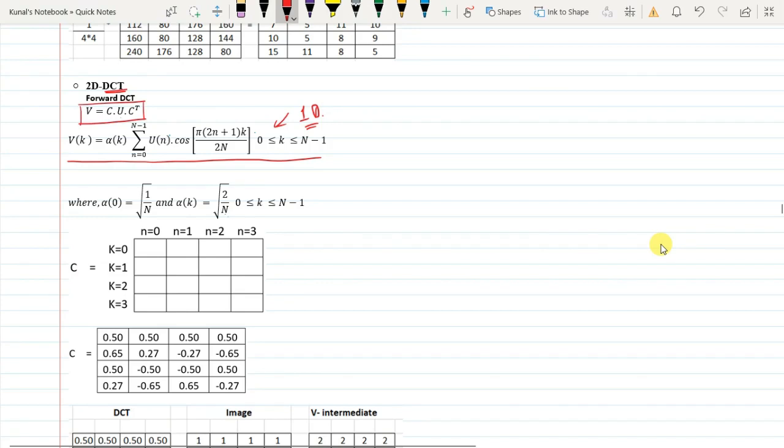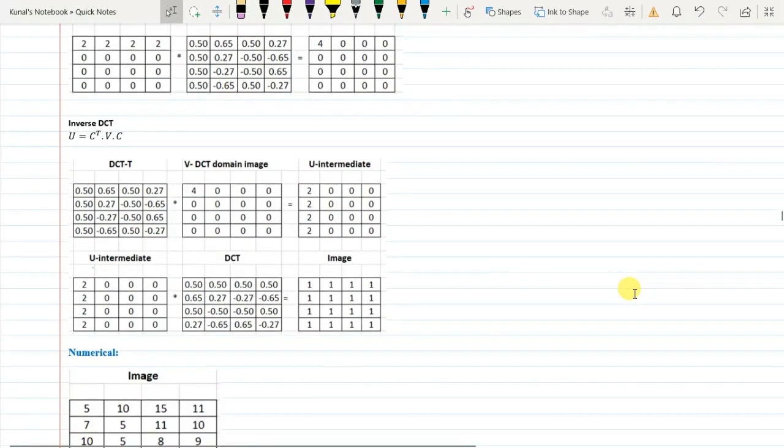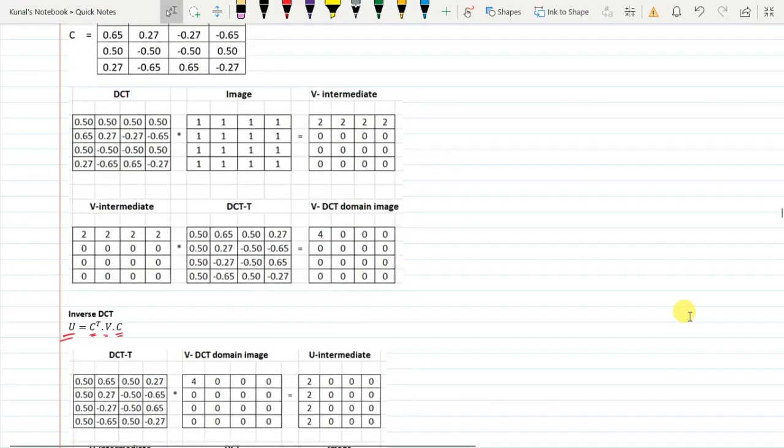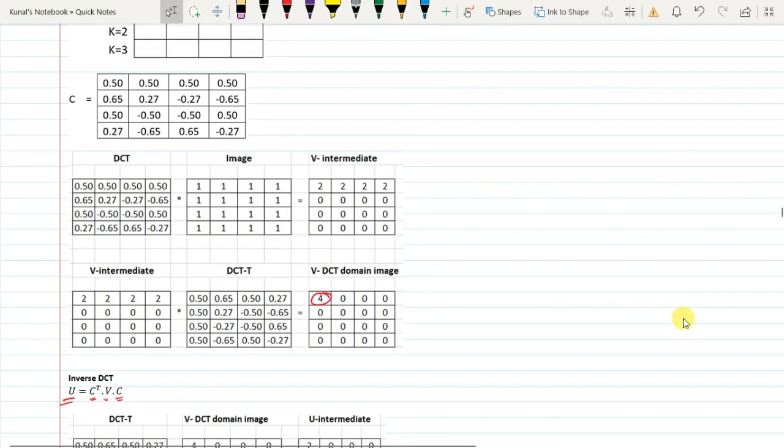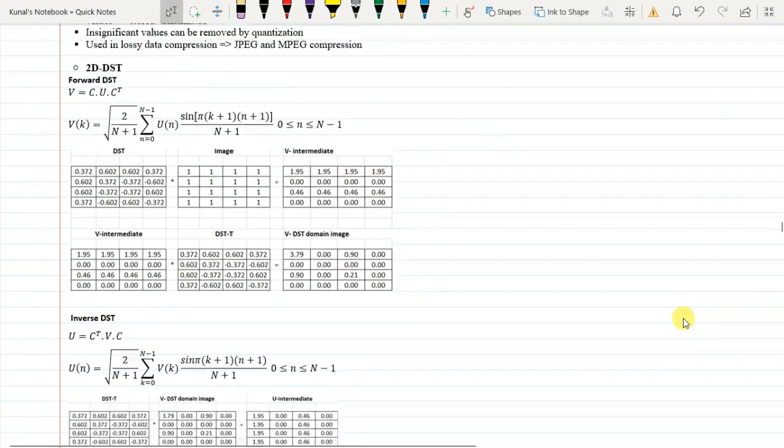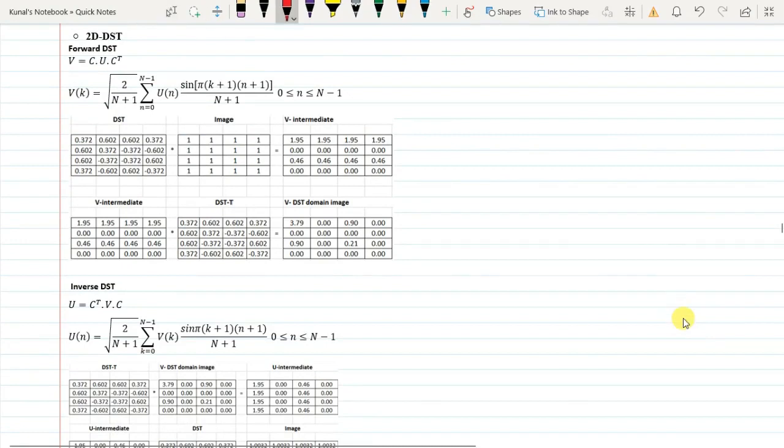For the DCT we have seen that for the forward DCT we have DCT matrix multiplied by original image multiplied by transpose of the DCT matrix. Similarly, in the inverse DCT to get back the original image we have to multiply the transpose matrix of the DCT with the frequency domain image and then the result should be multiplied with the DCT matrix. Another important thing we have seen is that DCT helps in significant compression of the image.